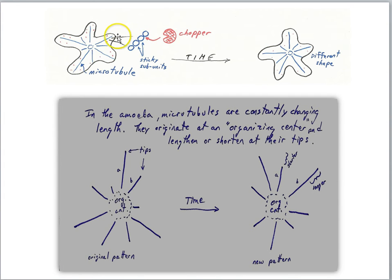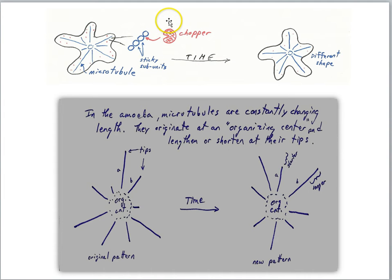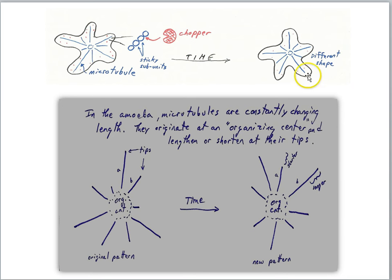This chopping occurs at the tips of the microtubule, not at the organizing center, but at the very tips. Choppers can bump around, and if they happen to bump into the end of the microtubule, they can chop off the last subunit. So with these two proteins — microtubules that can spontaneously form longer structures, and choppers which can shorten the microtubules — we have two proteins involved in changing the shape of an amoeba.